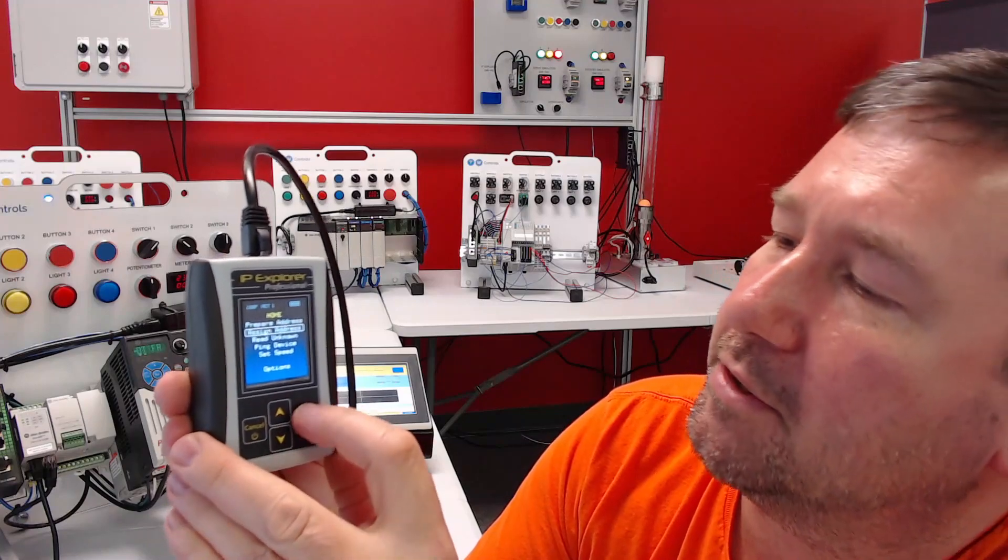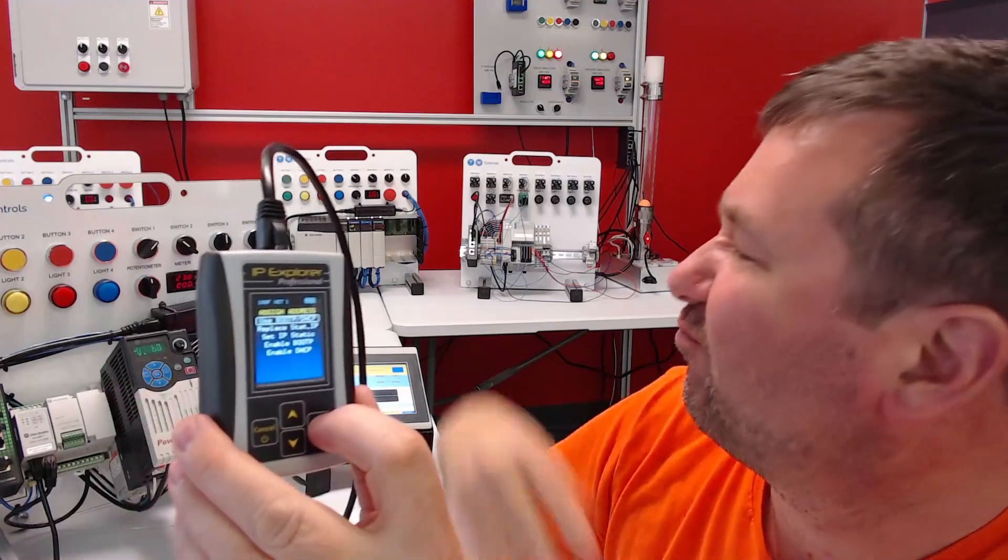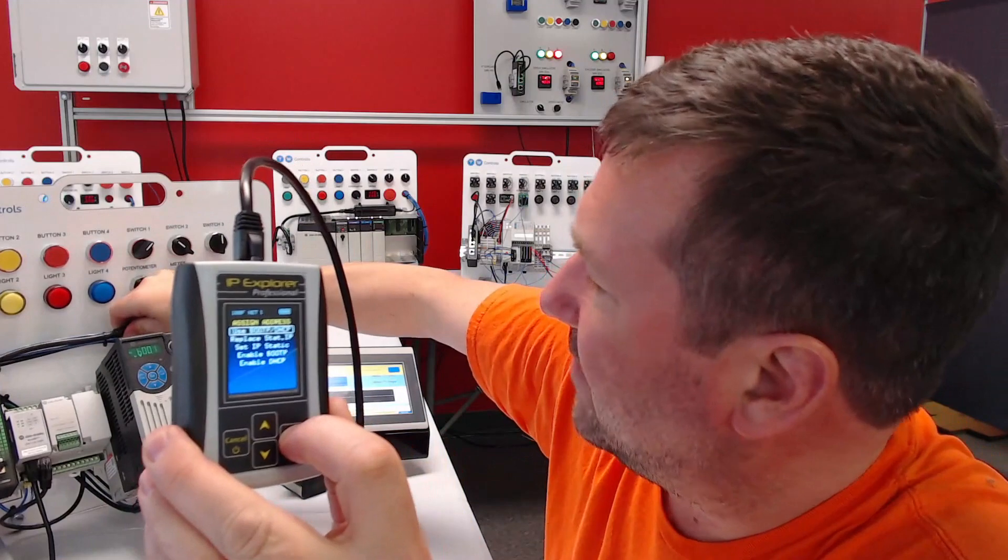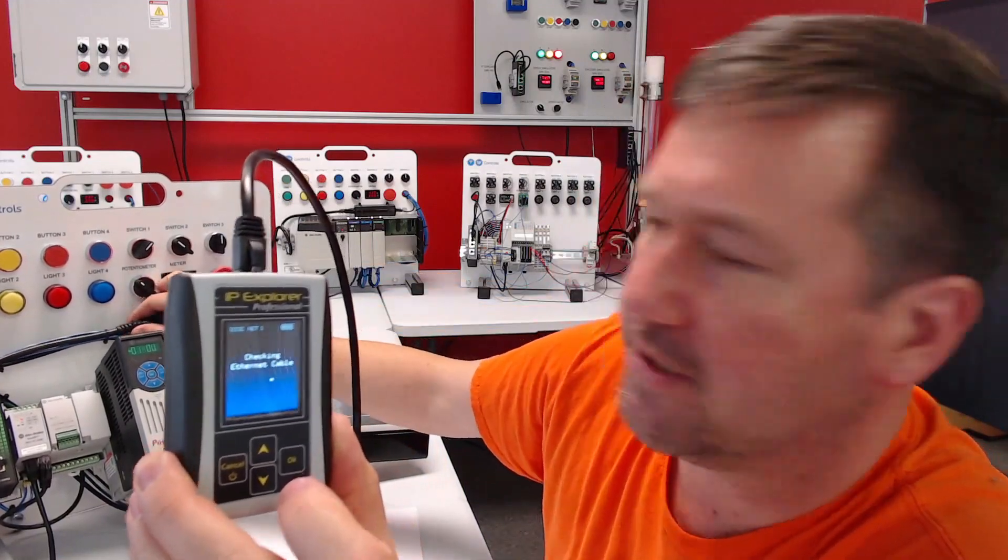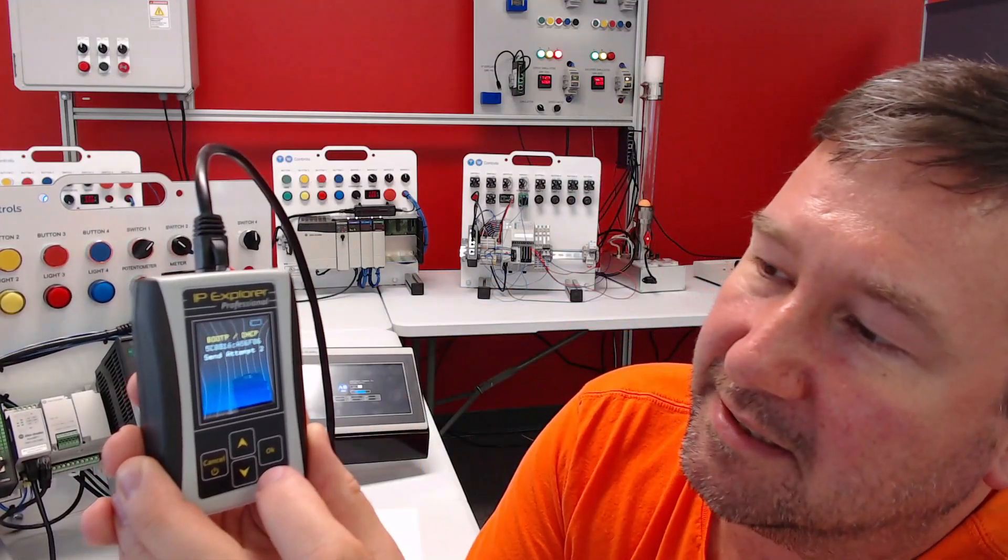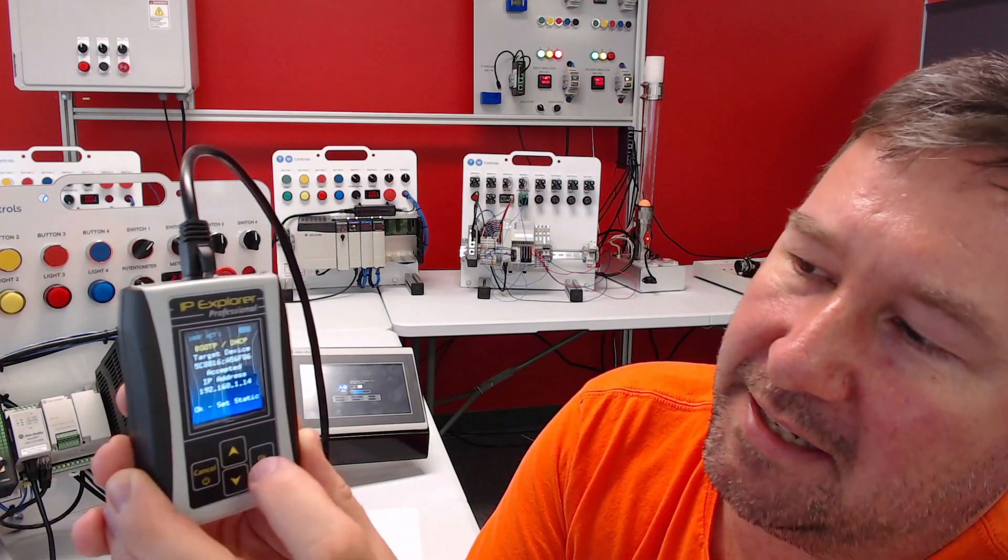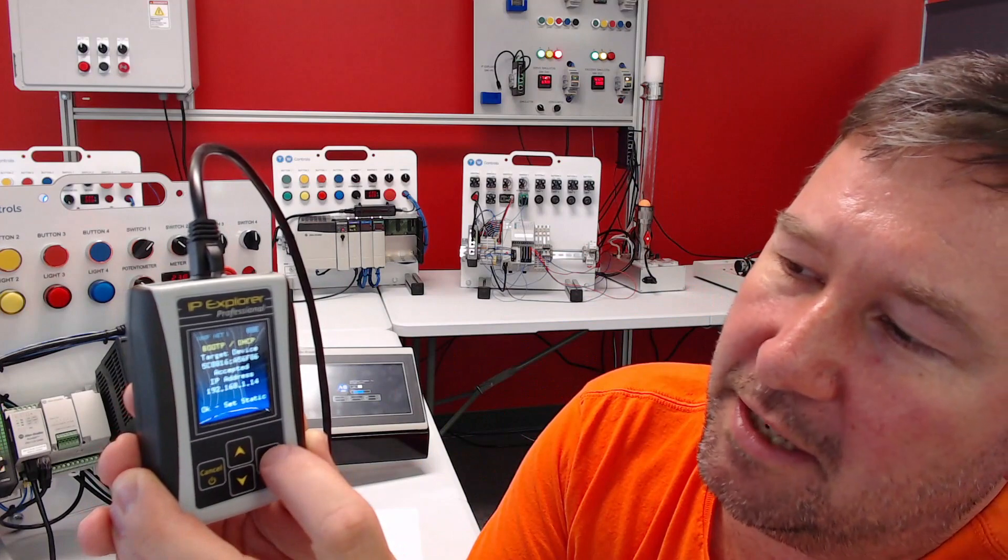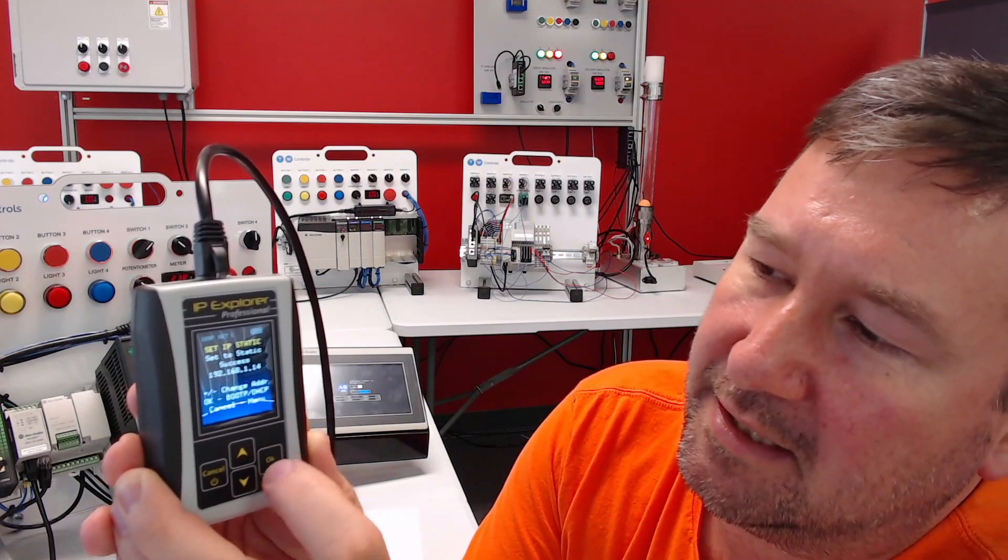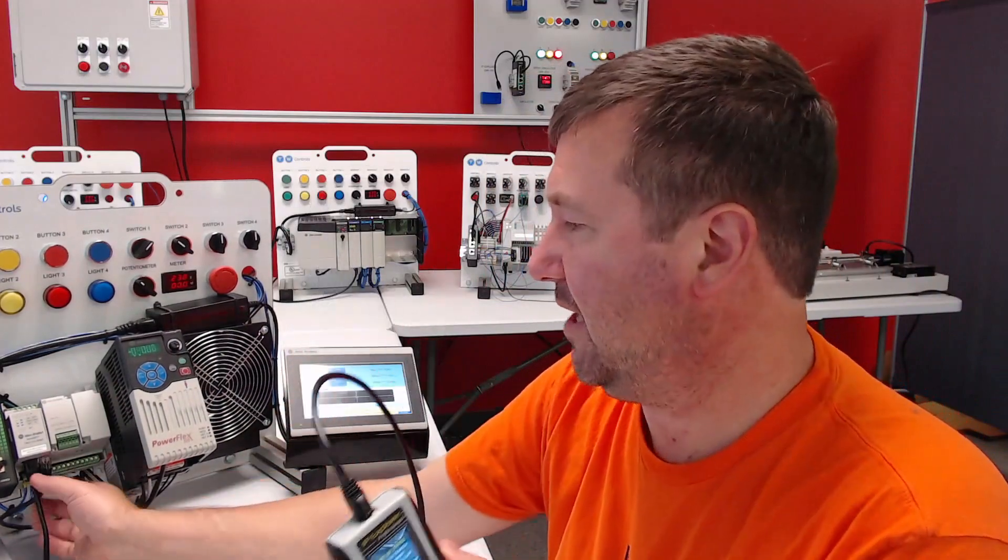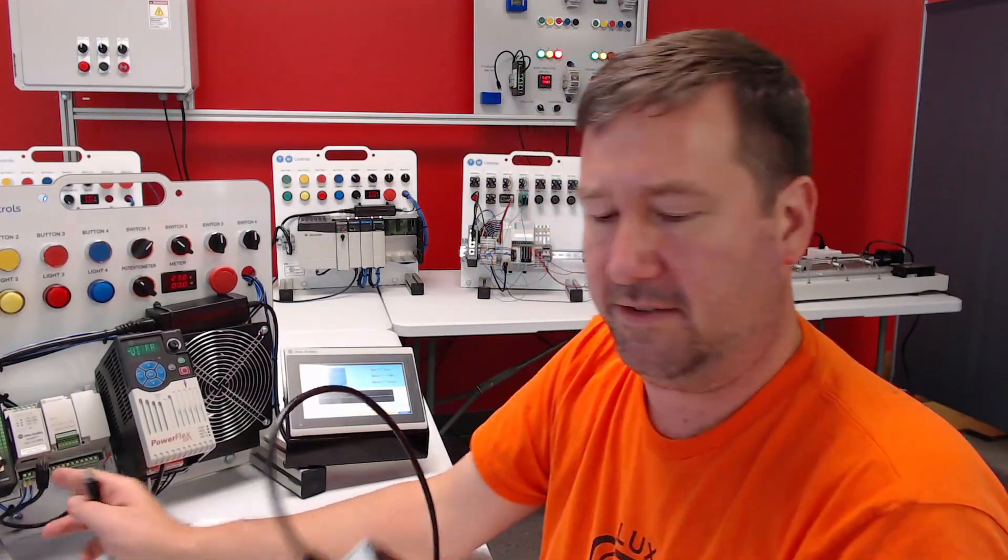And now I'm going to go to Assign IP Address, and this time when the Micro 820 powers up, it's attempting—and there you go, now it has assigned an IP address. And at the bottom we see 'OK to set the static,' so now we have a static IP address set. Now if you saw—so if you need to change it, you can also change it with this, and we have videos on that.